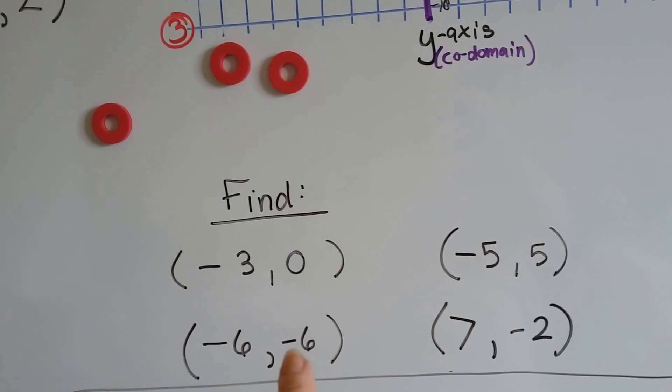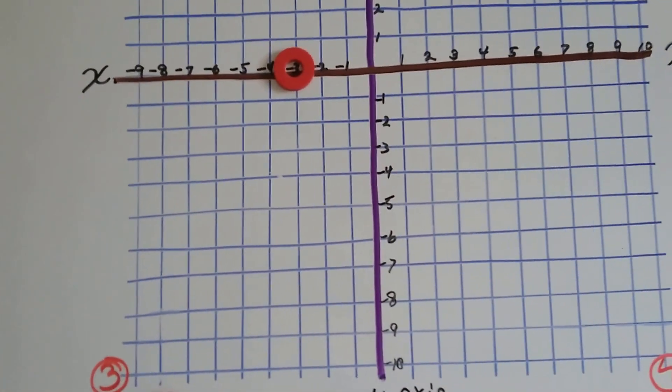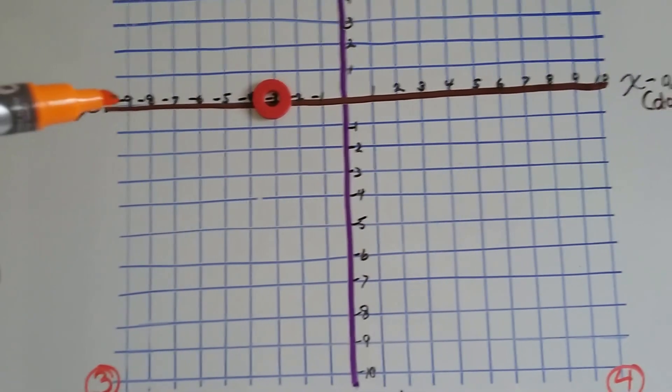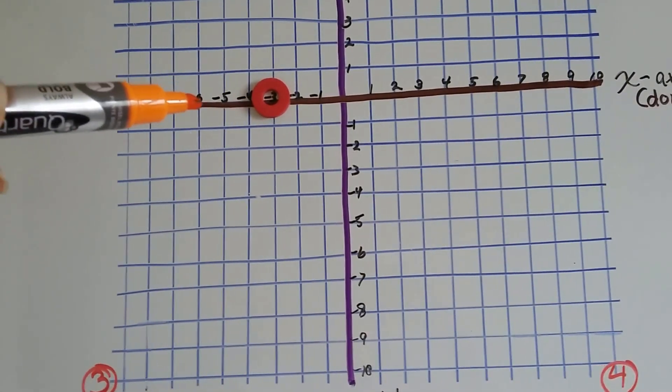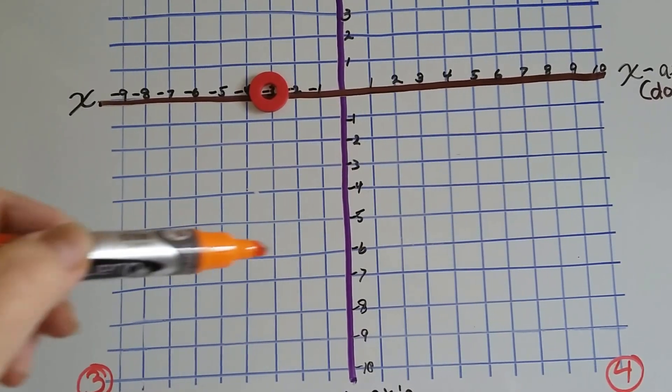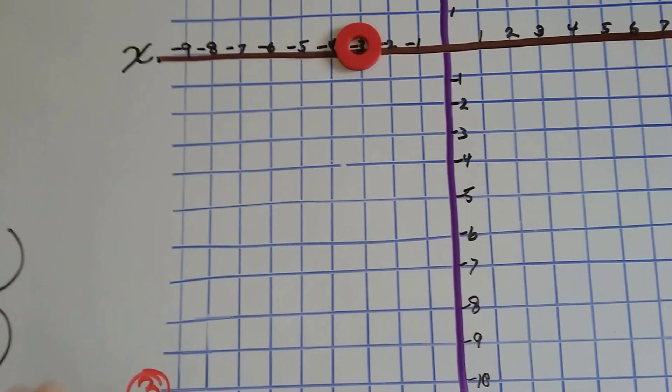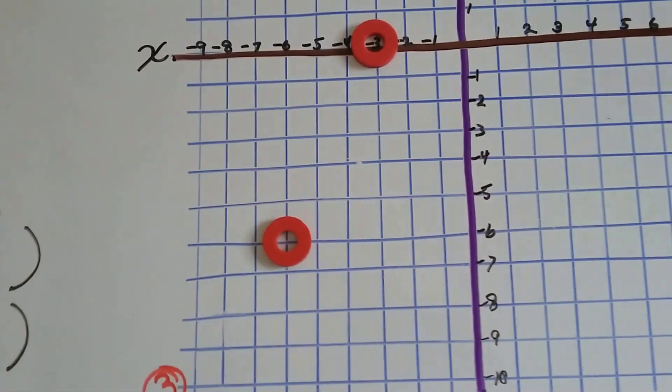The next one is negative 6, negative 6. Where would negative 6, negative 6 be? We start with the x. Here's negative 6. And, we find negative 6 on the y line. And, that's right there. So, negative 6, negative 6 is going to be right there.